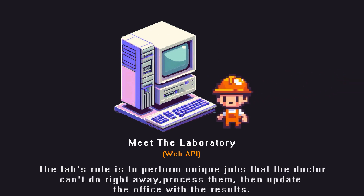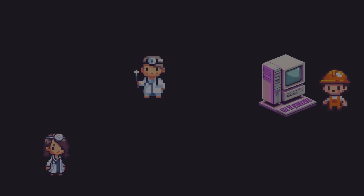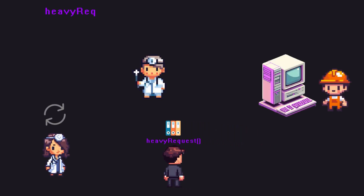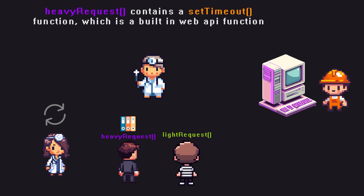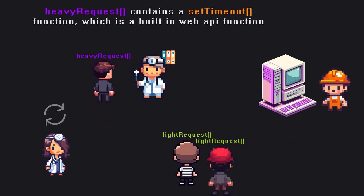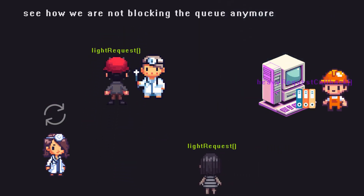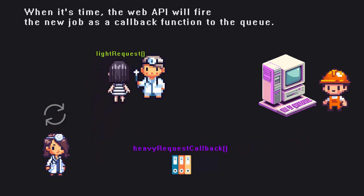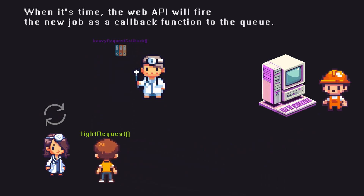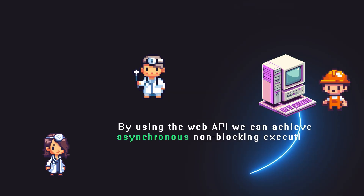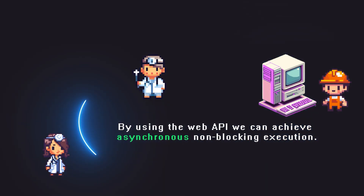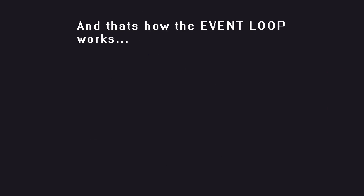To solve this, let's meet the laboratory. The lab's role is to perform unique jobs that the doctor can't handle right away, process them, and then update the office with the results. When the doctor encounters a heavy request, he sends it to the lab and continues getting more patients. When the lab finishes, it sends the result back into the queue using the Web API.